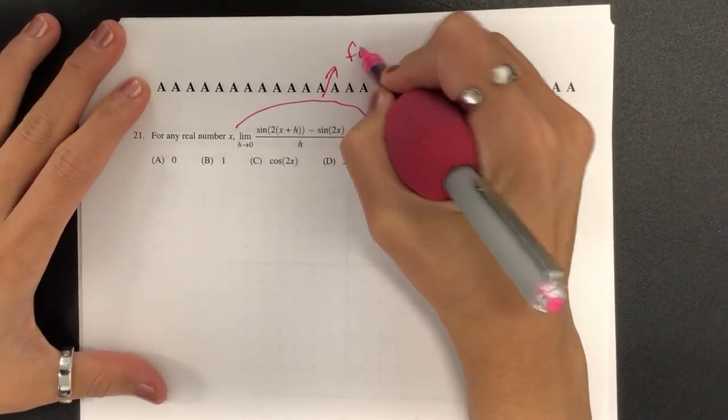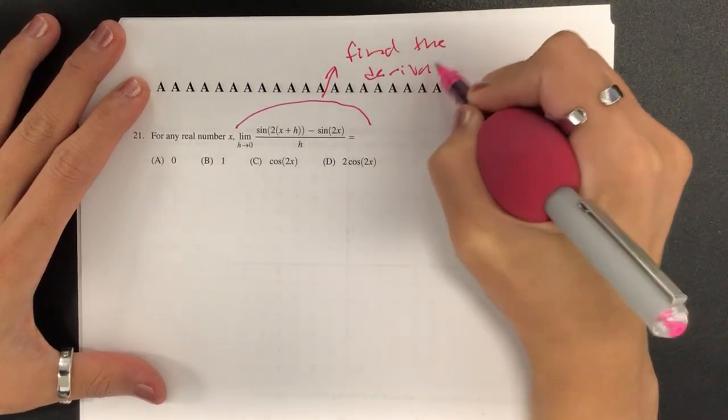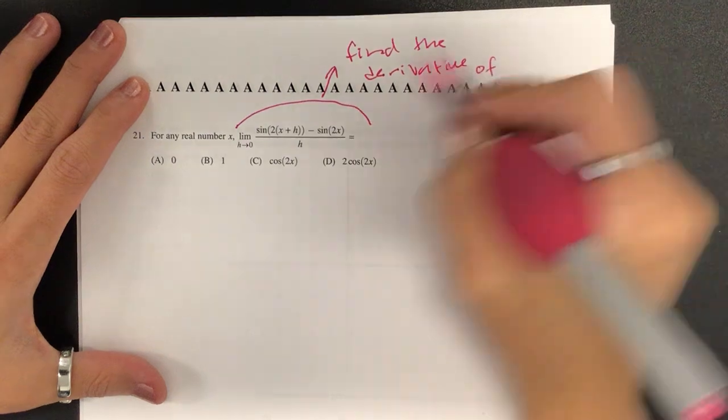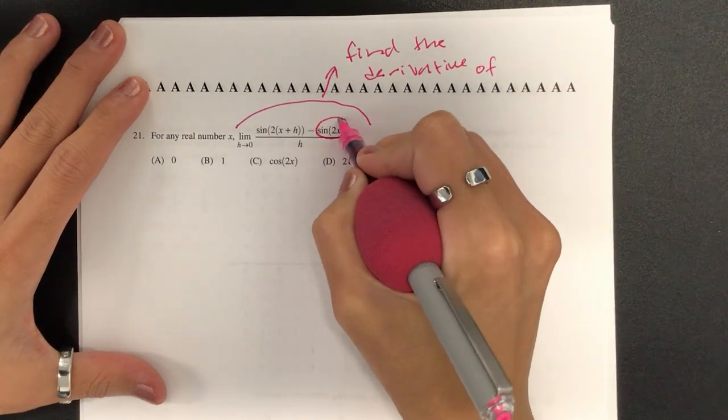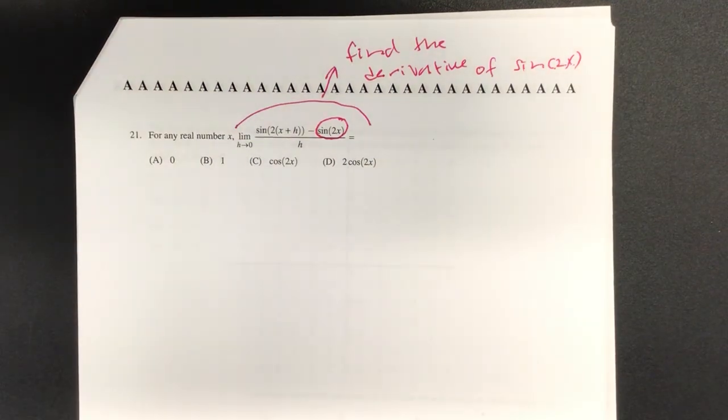It's trying to tell us find the derivative of this guy over here. It's always the last one, of sine of 2x. So if you get a question like this on your AP test, you can't miss it, okay?